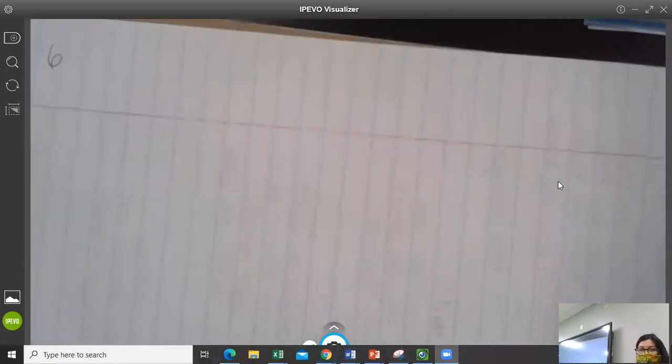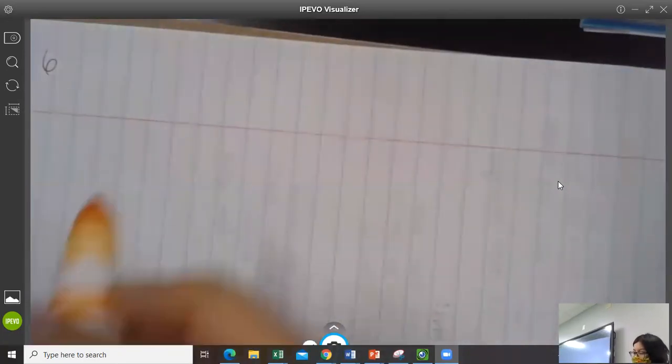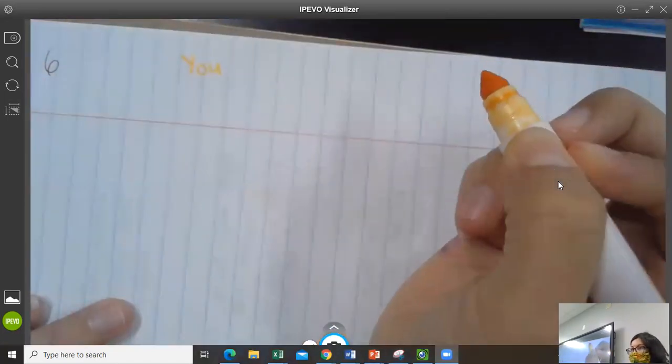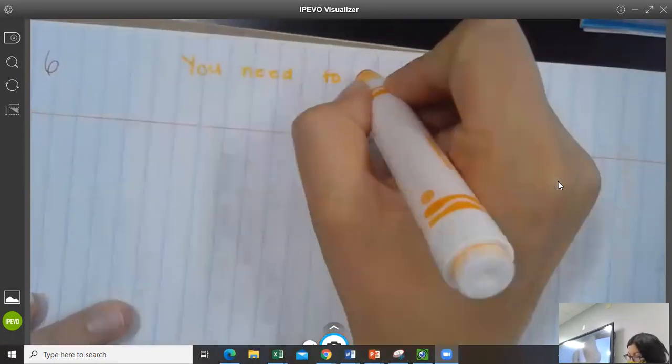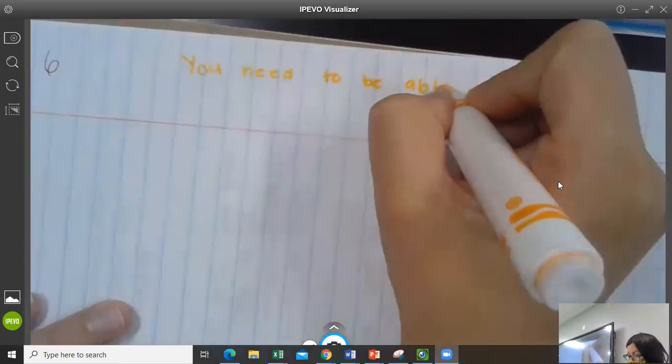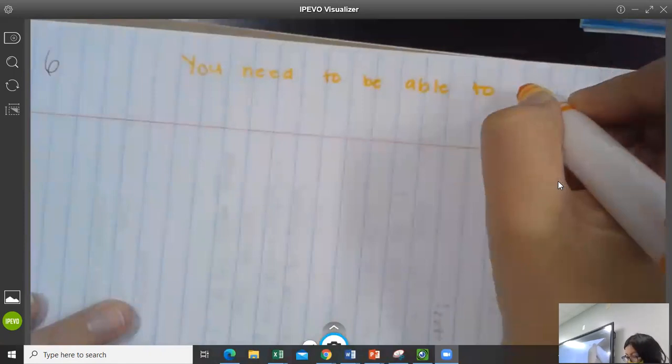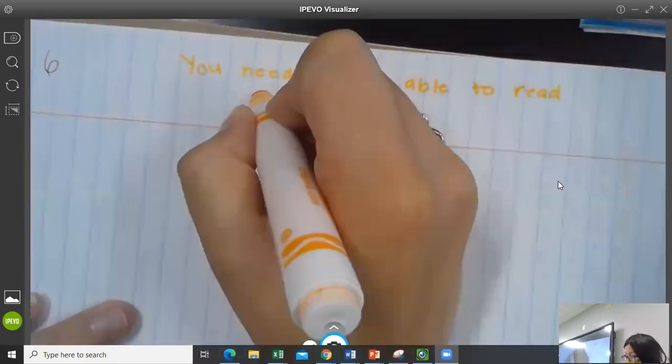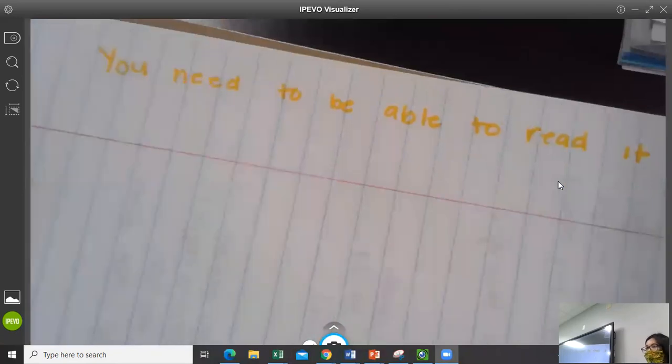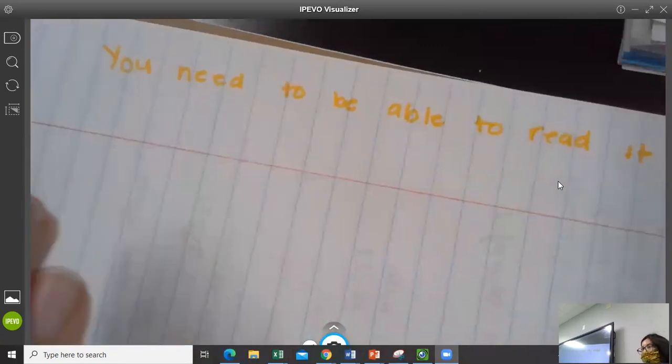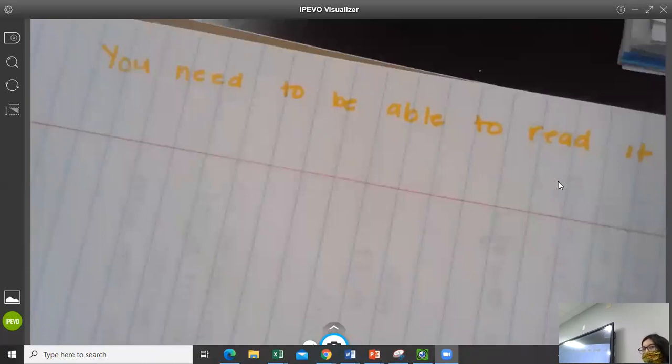So a couple of things about your notes. This is just good for you to know. When you take notes, there's two things that you need to realize. When you take your notes, you are writing it, so it's also for you to use later. So you need to be able to read it. Please write this on the side. I'm writing horizontally, that makes sense, like this is a landscape. You need to be able to read it.